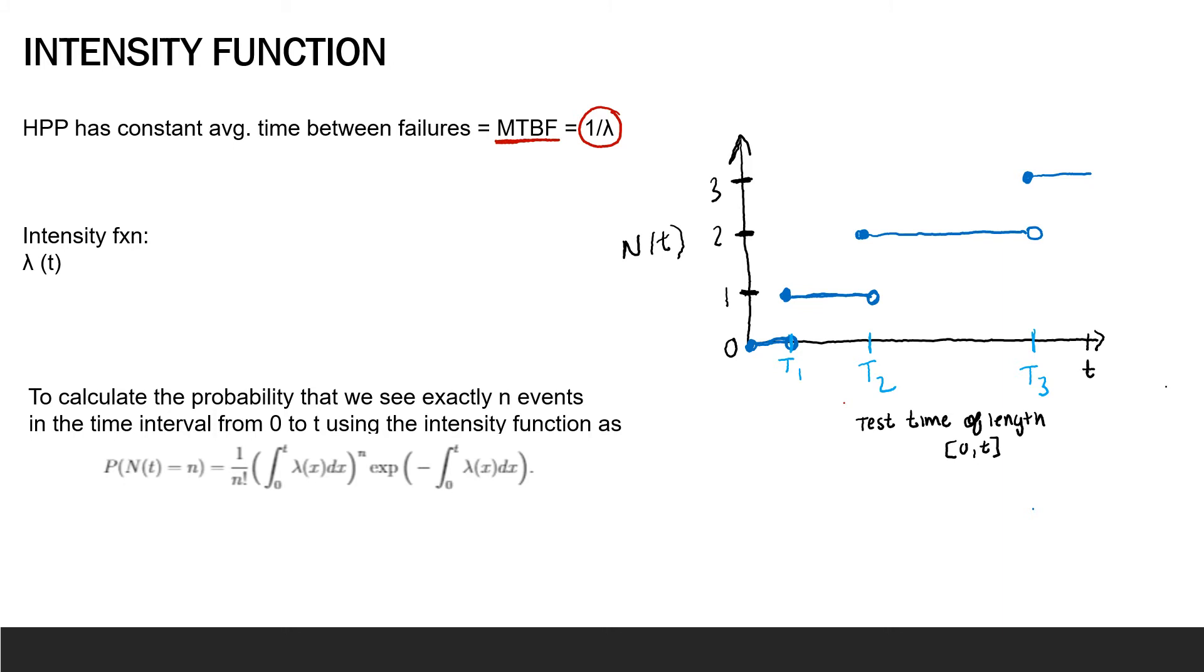But for cases where the rate of failure is not constant, we need a more complicated function to understand how many events we expect to see and the time between failures. And this function we use is called the intensity function.